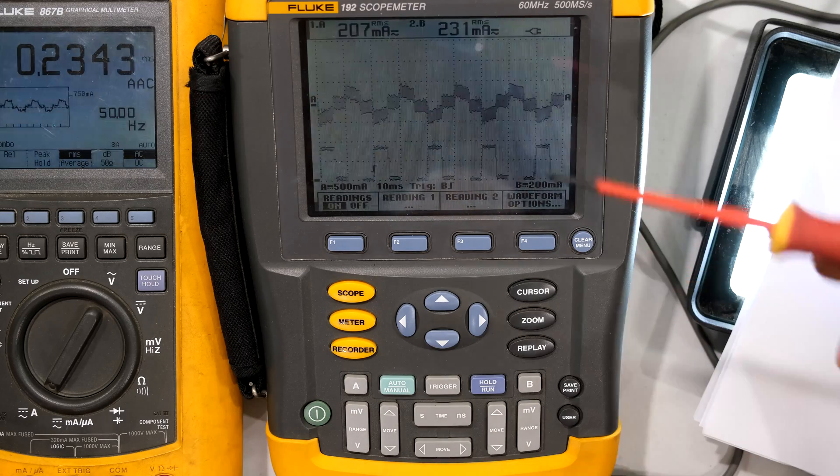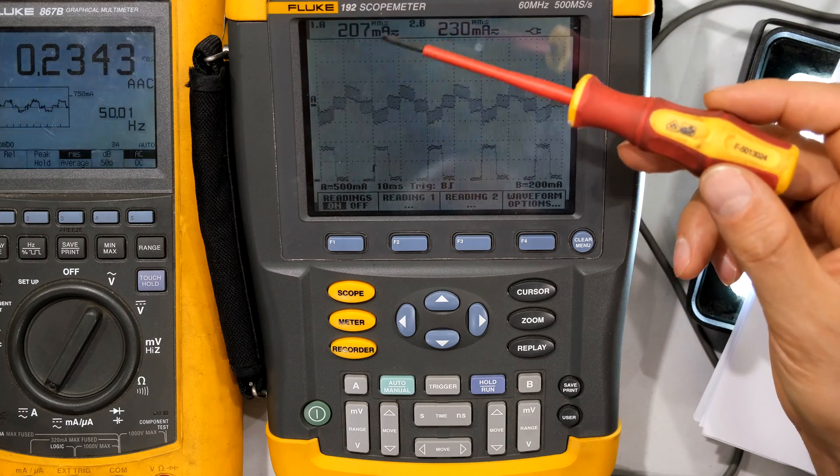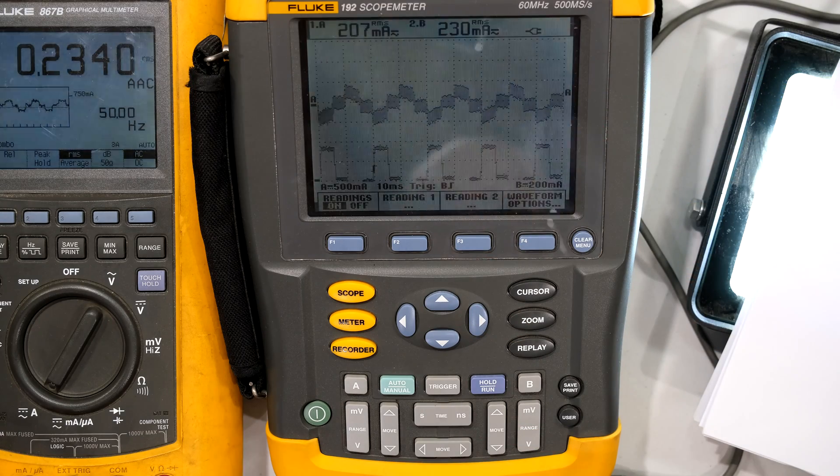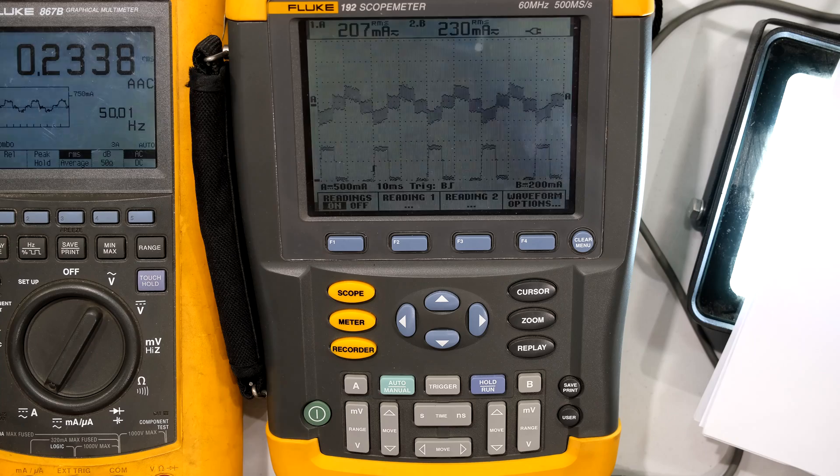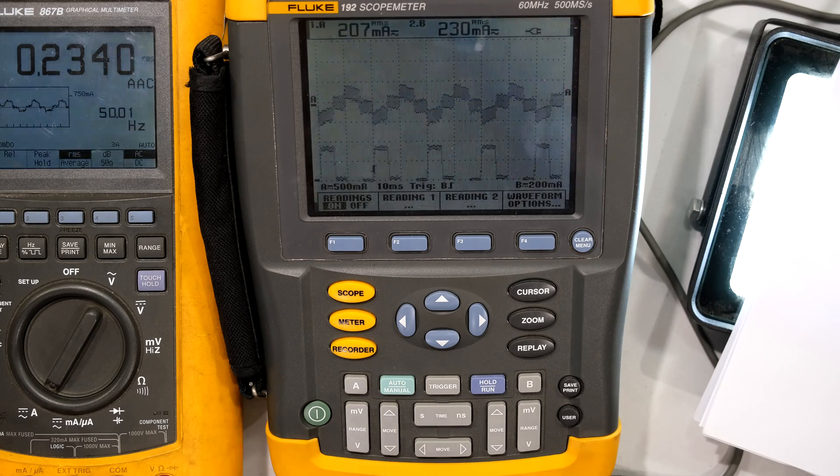Now the current clamp, the MN39, is a bit lower at 207 milliamps. Now let's check the inrush current.